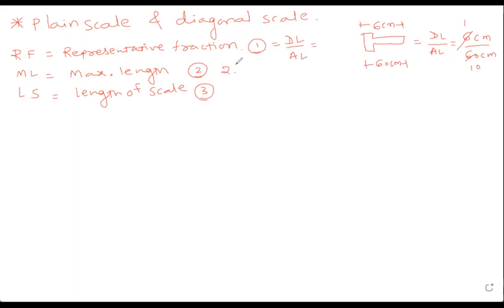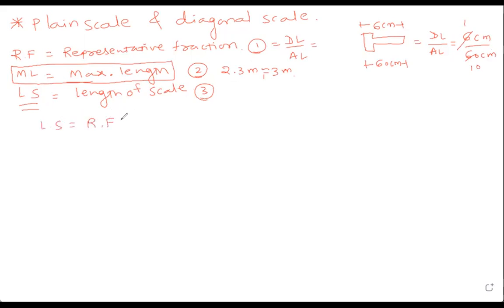Maximum length will be given to you — for example, measure up to 3 meters. Length of scale is calculated using the formula: LS = RF × ML. RF is generally found or given, maximum length is always given, and you always find the length of scale.